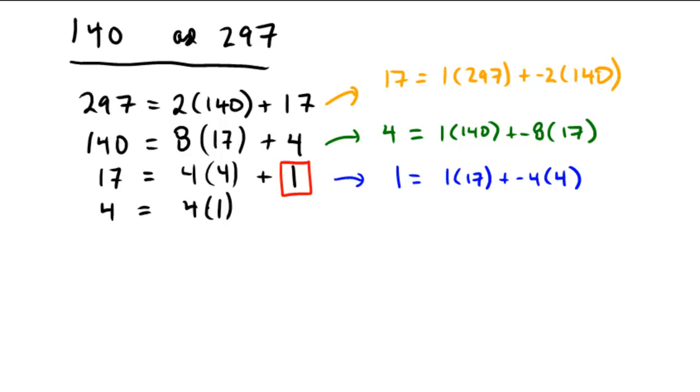Going through the blue here, we have 1 times 17 plus negative 4 times 4. So that would be equal to 1 times 17 plus negative 4 times 1 copy of 140 plus negative 8 copies of 17. Collecting like terms and distributing, we got negative 4 copies of the 140. And then we have 1 times 17, but from the negative 4 times the negative 8, we're getting positive 32 copies of 17. So we're going to get a total of 33 copies of 17.